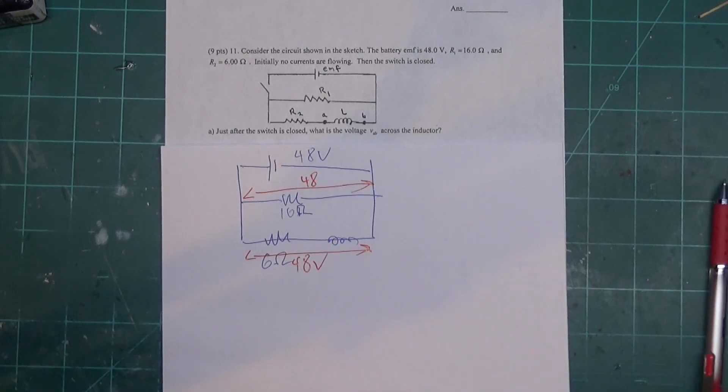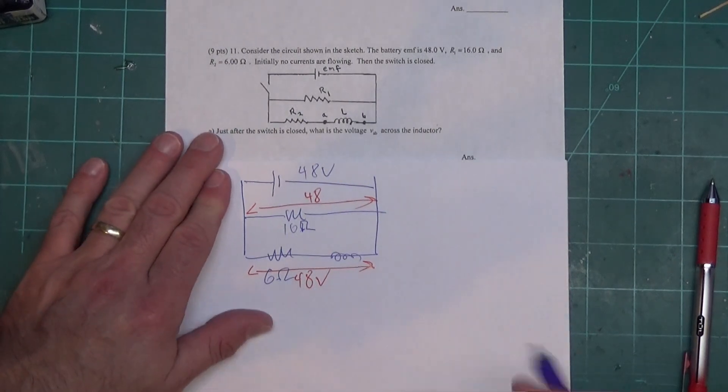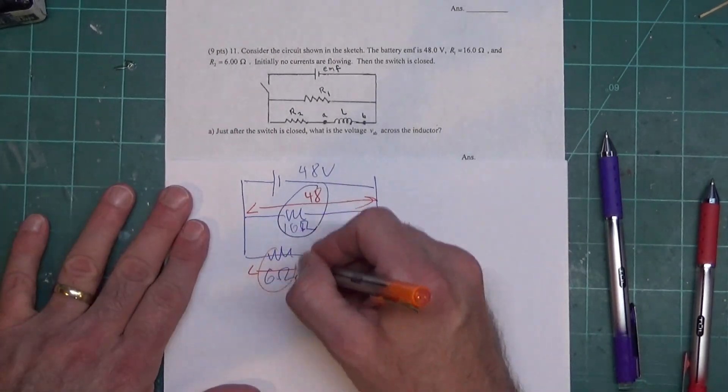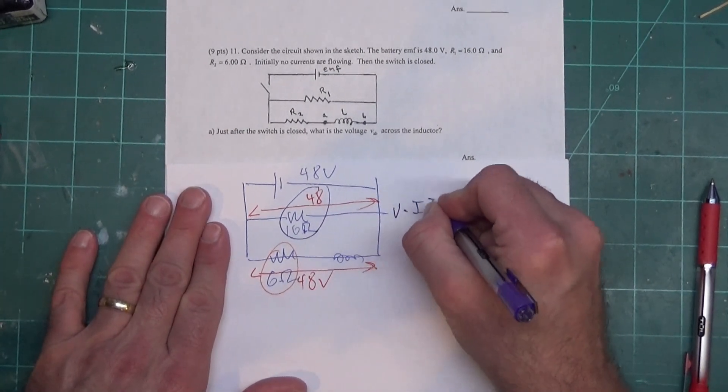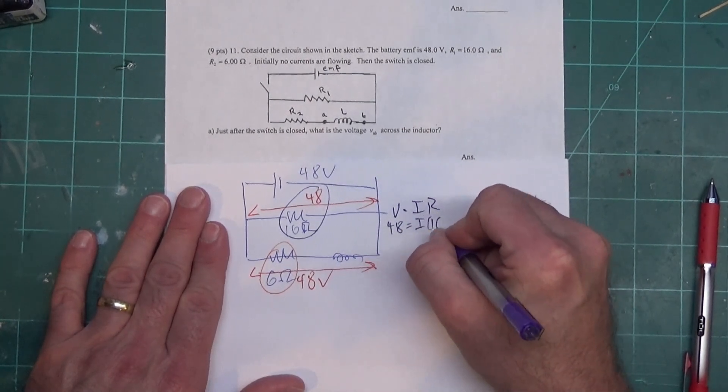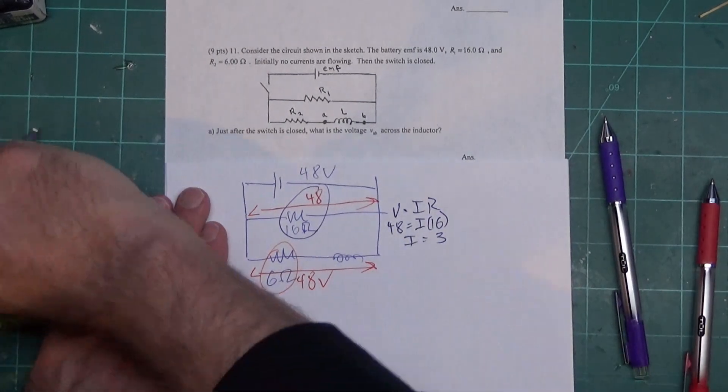Now the inductor is not affecting the current or the voltage at this point. The only things working on voltage and current will be the two resistors. So if I were to come up here and do V equals IR on the top one, 48 equals I times 16. I end up with I equals 3.